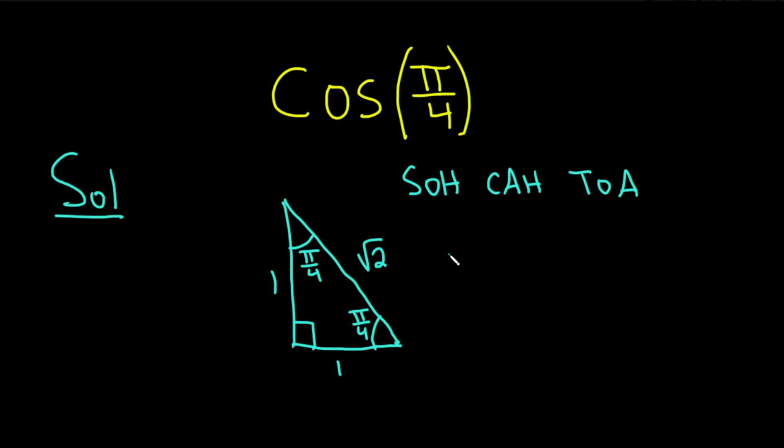So for us, we have the cosine of pi over 4. So this is equal to adjacent over hypotenuse. So if we look at this pi over 4 here, it's going to be adjacent, which is 1.